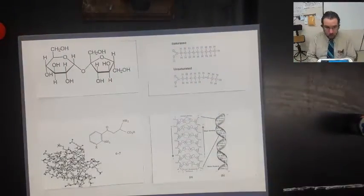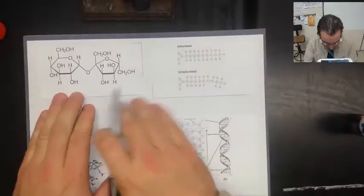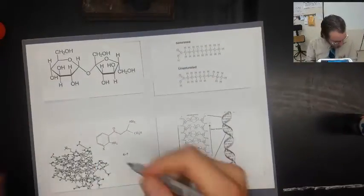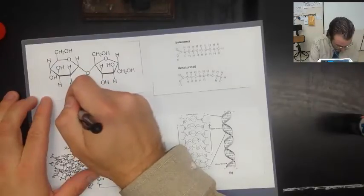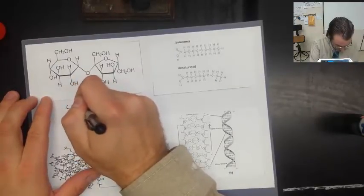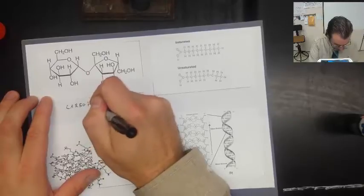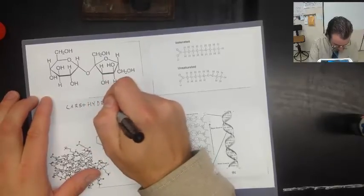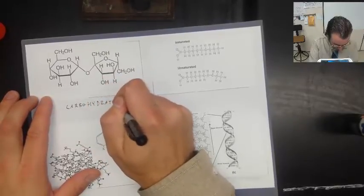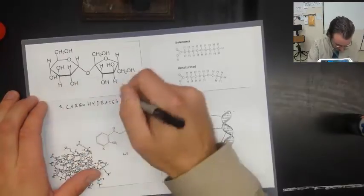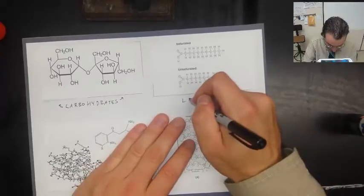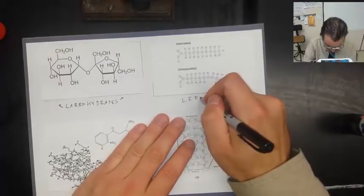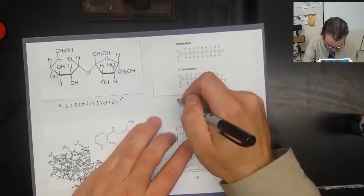Now, I'm going to use Sharpie just so it shows up better on the camera. You can use pen, pencil, whatever. These are carbohydrates right here. So, you probably want to do... I like to do little arrows. That way you can remember that carbohydrates. These are lipids.